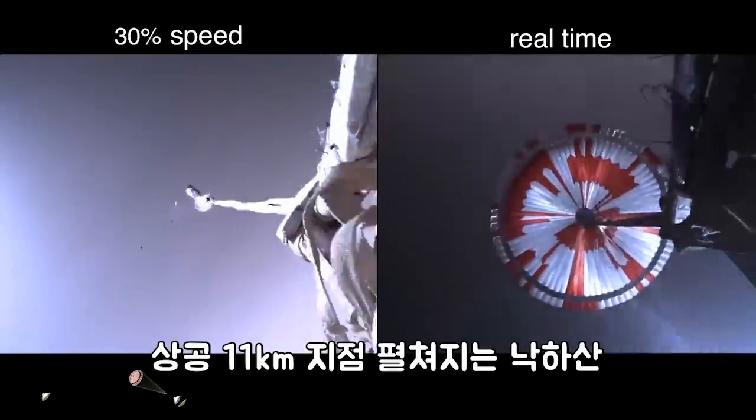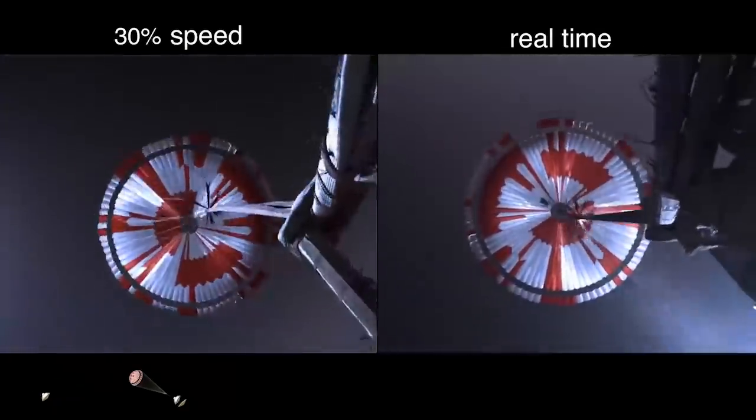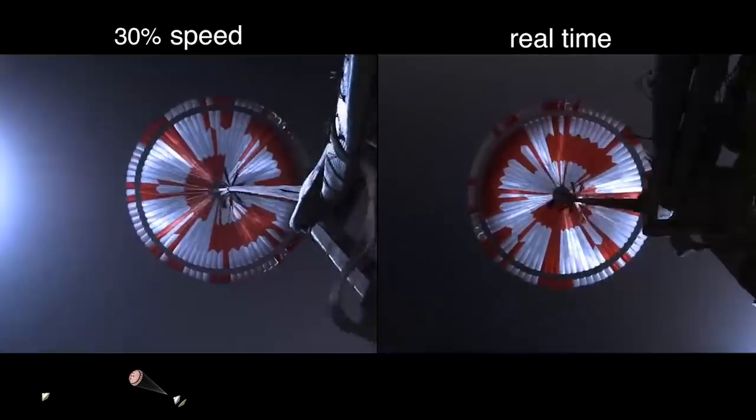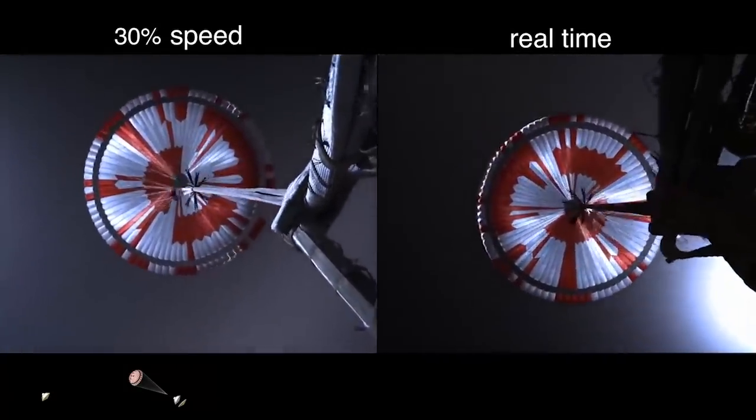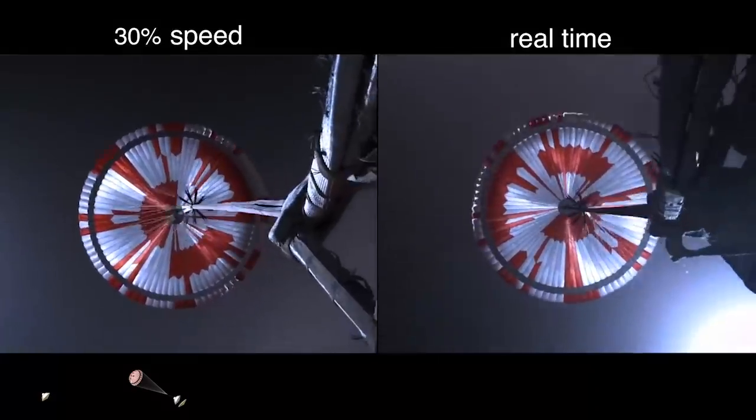Parachute deployed. The navigation has confirmed that the parachute has deployed, and we are seeing significant deceleration in the velocity. Our current velocity is 440 meters per second at an altitude of about 12 kilometers from the surface of Mars.